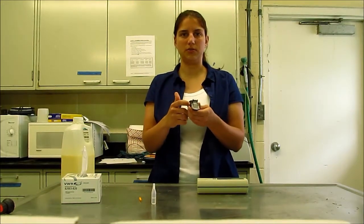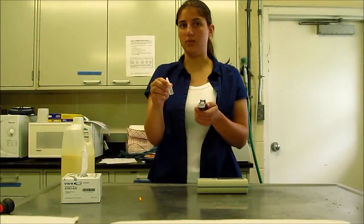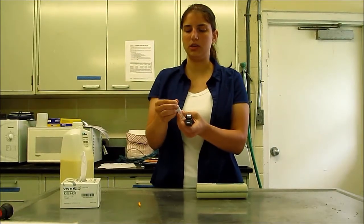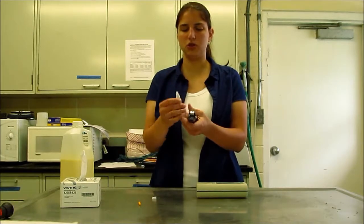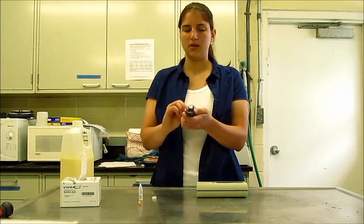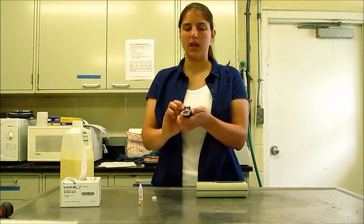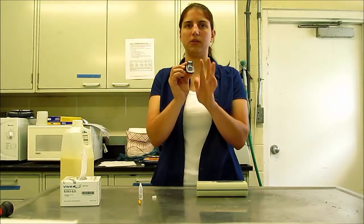In order to calibrate the refractometer, you will use some clean, clear water that should come with your refractometer. Very simply, you'll take the water and put just a few drops on the surface, flip the cover down to spread that out, and then look through the eyepiece at the scale at the bottom of the refractometer.